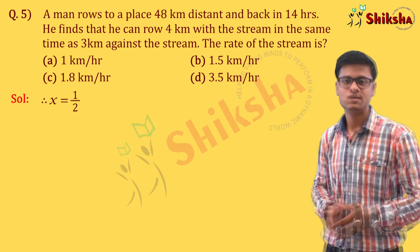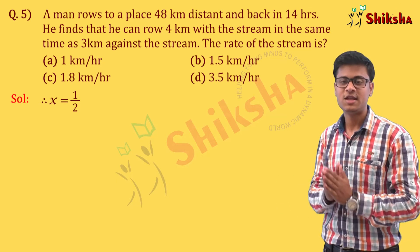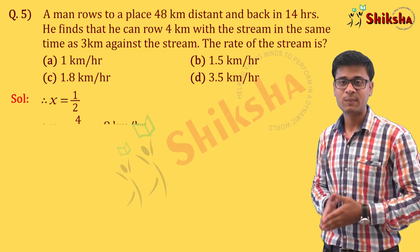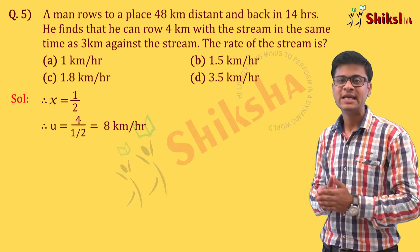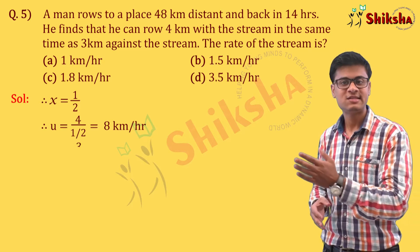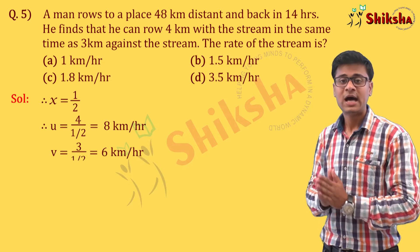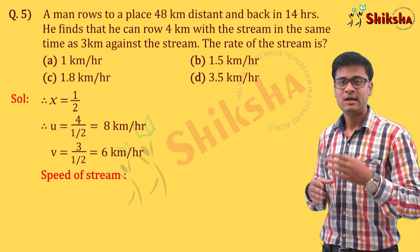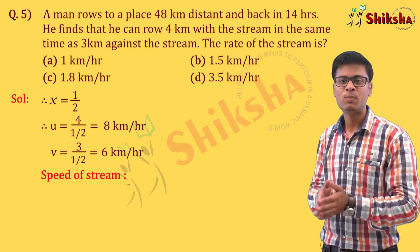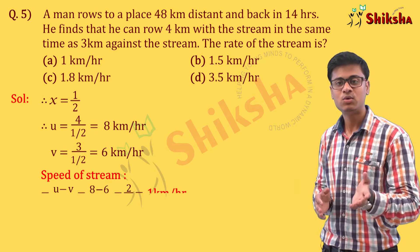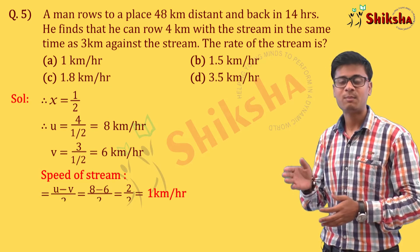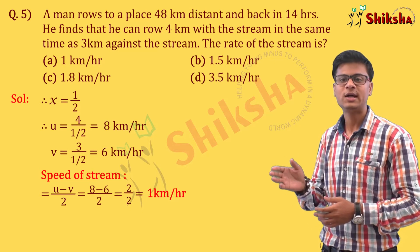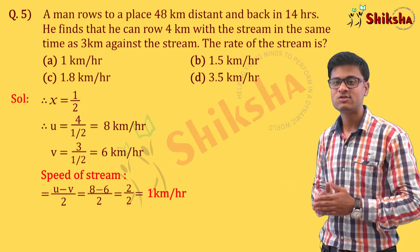So our downstream speed u = 4 ÷ (1/2) = 8 km per hour, and upstream speed v = 3 ÷ (1/2) = 6 km per hour. The speed of the stream is (u − v)/2 = (8 − 6)/2 = 2/2 = 1 km per hour. Answer is Option A.